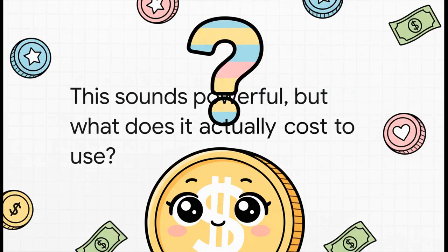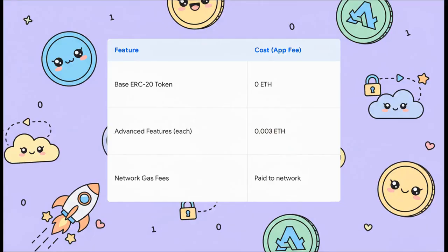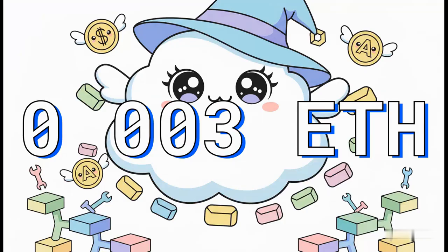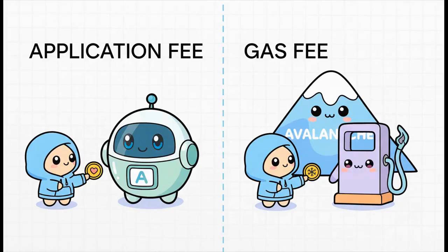This sounds great. But you're probably wondering, what's it going to cost? The basic token is actually free to create — zero cost from the app. You only pay a tiny fee for any of the advanced features you decide to add on. Just remember, blockchain gas fees are separate. You pay those directly to the Avalanche Network.